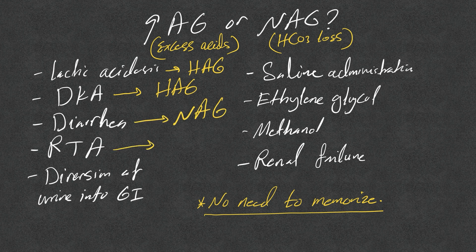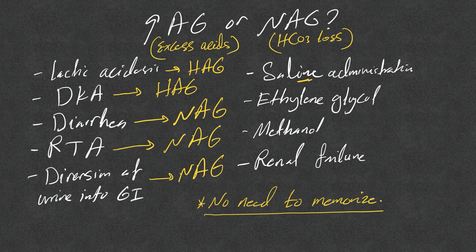Diversion of urine into the GI tract leads to bicarb loss — normal anion gap. Saline administration leads to bicarb loss and dilutional effects on bicarb — normal anion gap. Ethylene glycol is consumption of an exogenous acid, leading to excess acid in the ECF — high anion gap. Same for methanol.